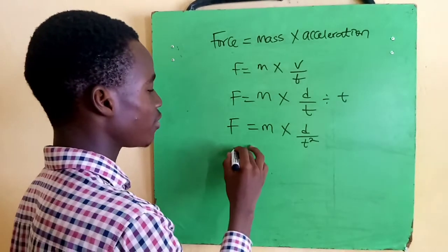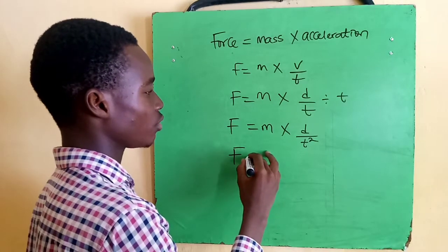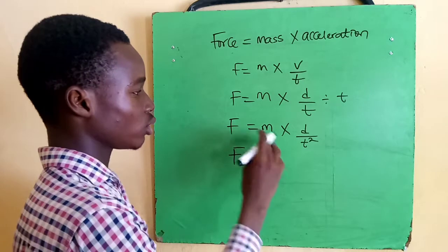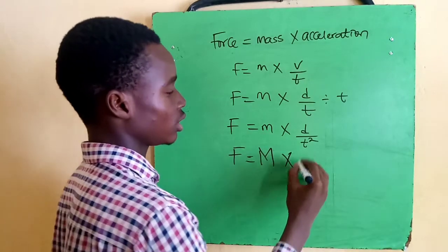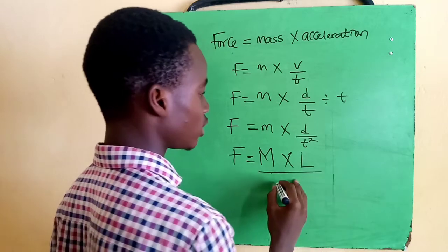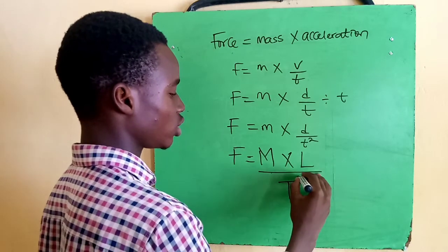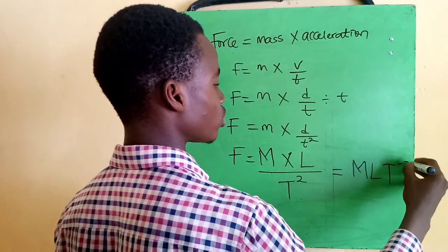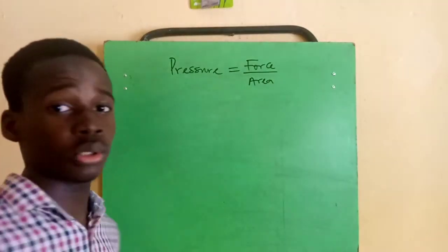The dimension of force will be M (capital letter M, which is dimension of mass) times the dimension of distance, which is capital letter L, over the dimension of time, which is T squared. So we have MLT raised to power minus two.